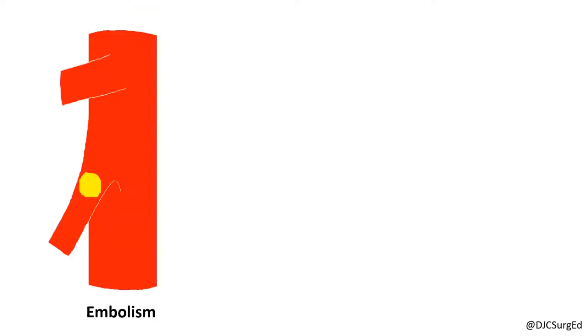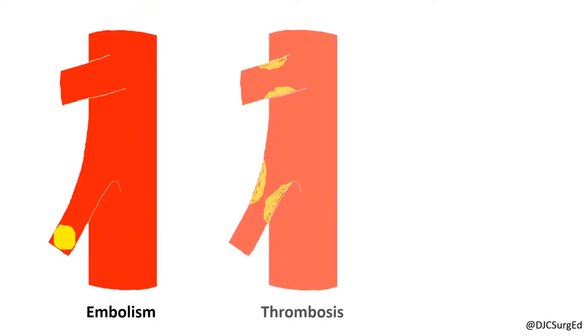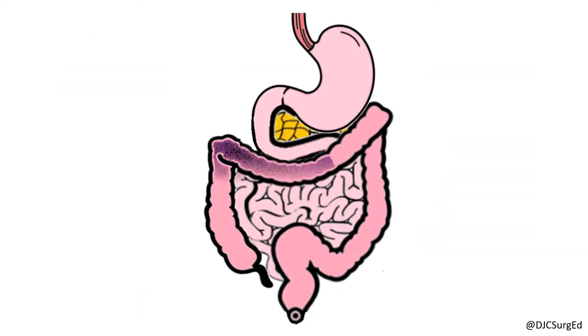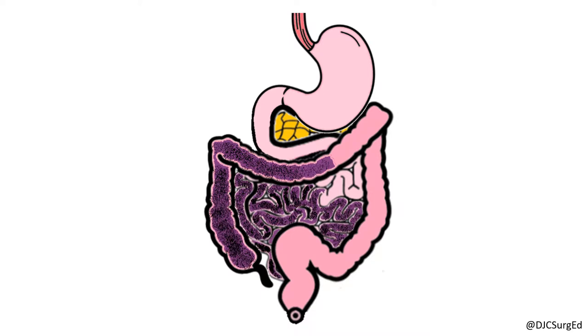Acute mesenteric ischemia occurs when there is an interruption of blood flow to the intestines by embolism, thrombosis, or a low flow state, ultimately leading to intestinal infarction.